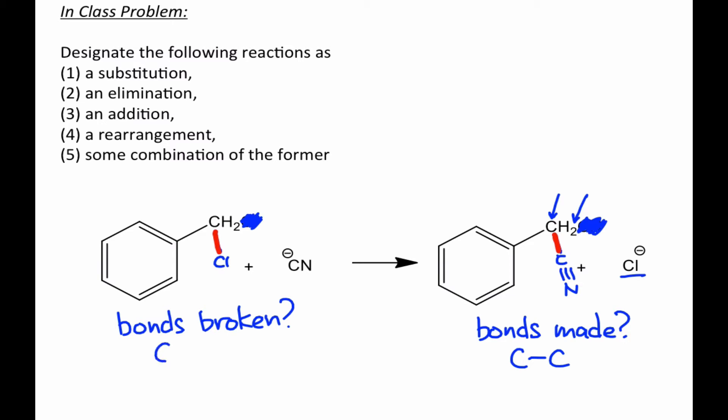Evidently, then, all this reaction has done is replaced or substituted a carbon-chlorine bond for a carbon-carbon bond. As a result, we would identify this reaction as an example of a substitution.